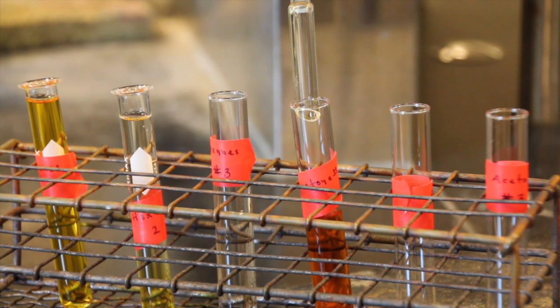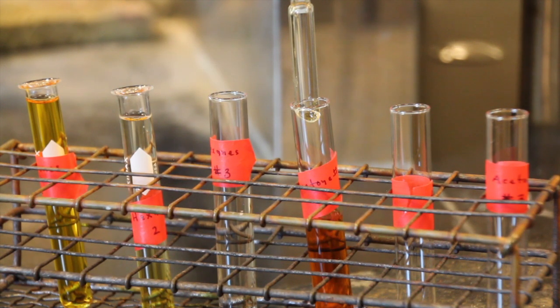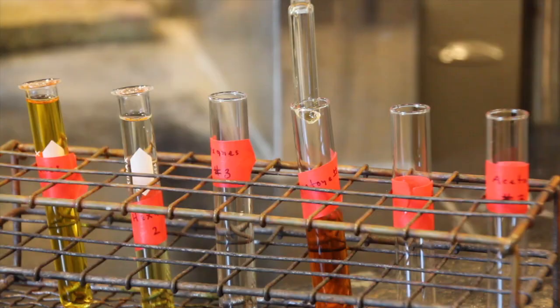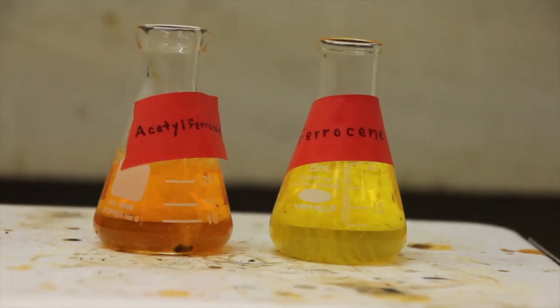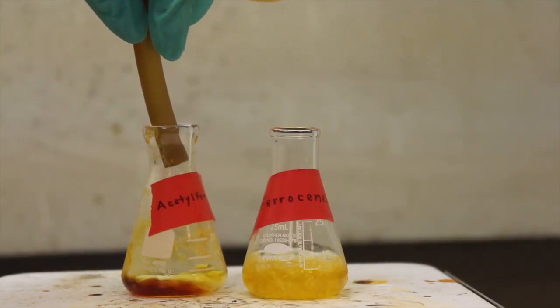Ideally, by the time a compound reaches the bottom of the column, it has become separated from other components in the mixture. The fractions that come off of the column containing a desired compound without contamination can then be combined, the solvent evaporated, and the compound obtained in purified form.